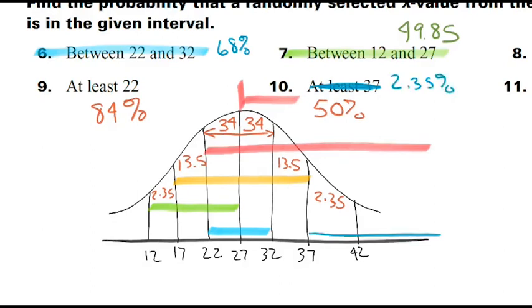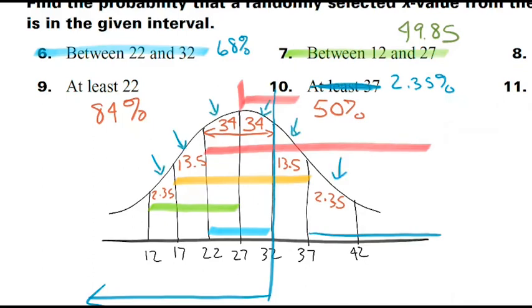At most 32: everything to the left, which is 50% plus 34%, which is 84%. So if you know the 68, the 95, and the 99.7, you can come up with these numbers. If everything is falling on a standard deviation boundary, it's quicker to compute without a calculator. You could have answered every single one of these using the normal cumulative distribution function on your calculator, but if it's a non-calculator portion on the SAT, this rule-of-thumb approach is the way they'd expect you to do it.